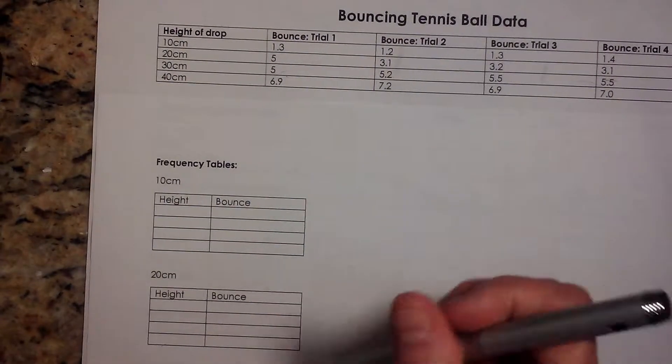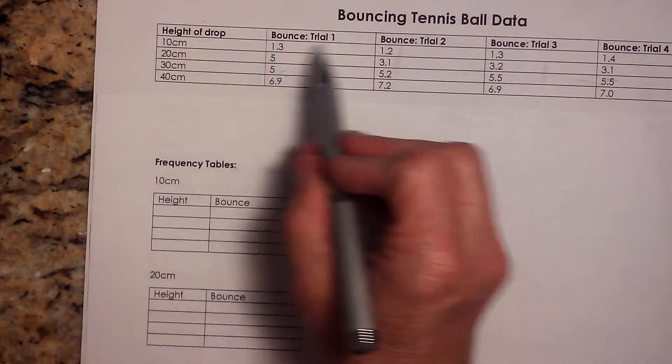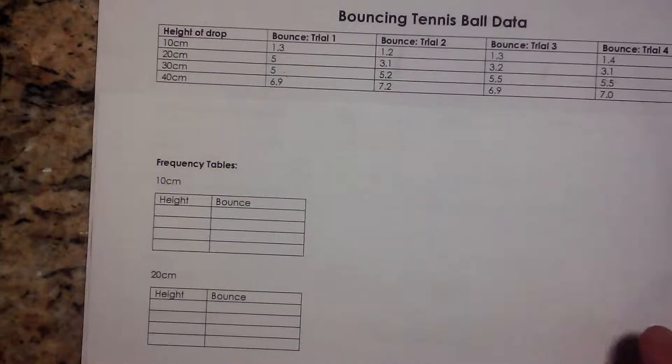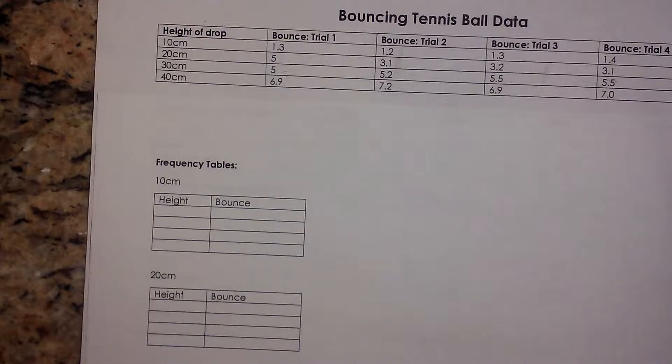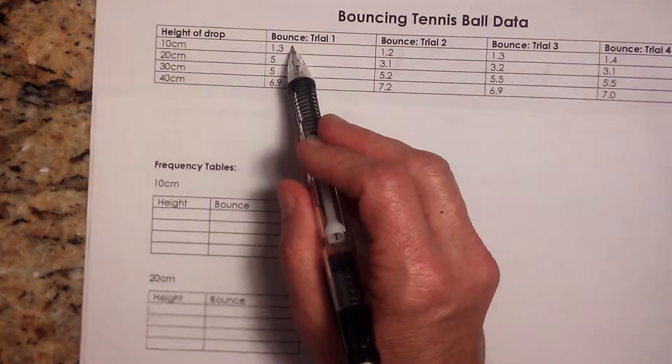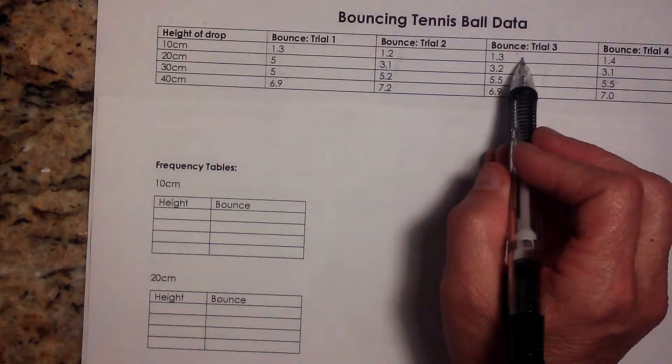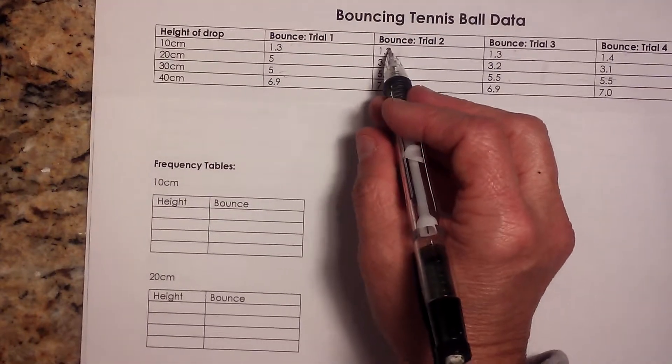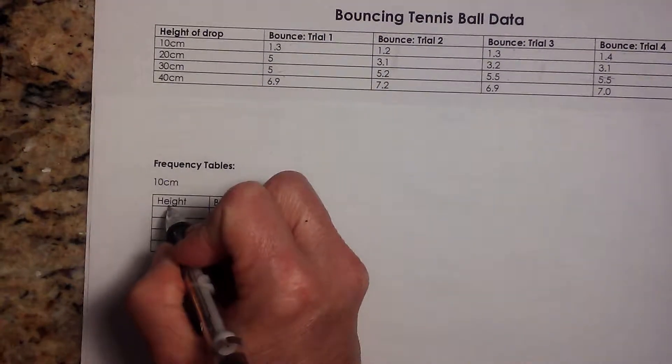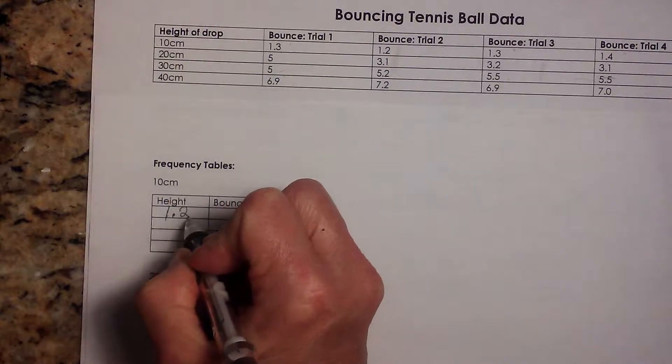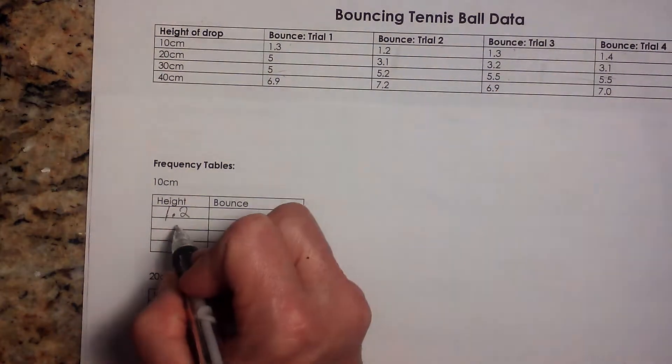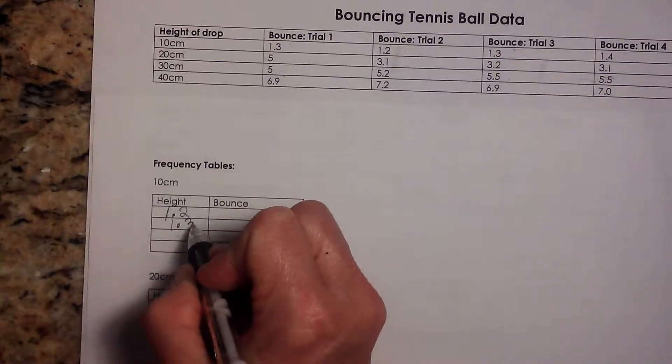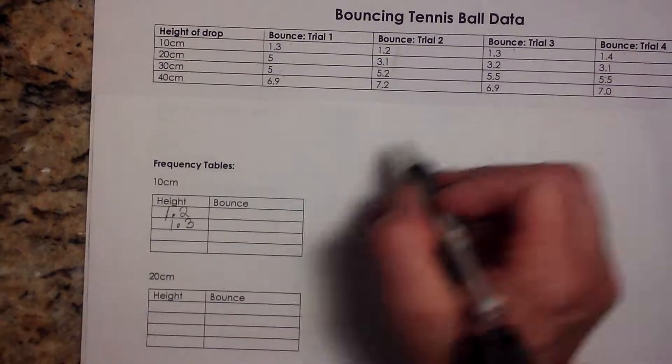So the first thing we need to do is we're going to concentrate on the row that's got bounced from a height of 10 centimeters. So we need to list all the different values that occurred. Well, the smallest height was 1.2. So I'm going to list that first. My next smallest height was 1.3, and then my highest bounce was 1.4.